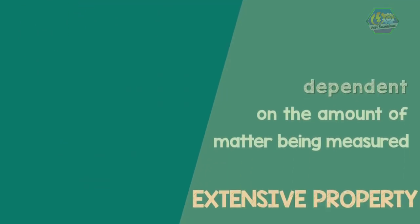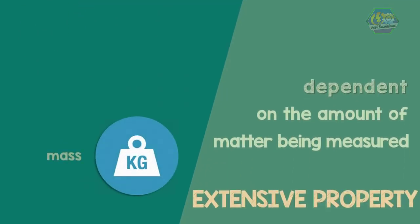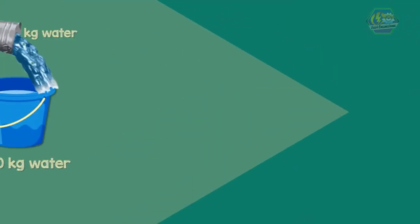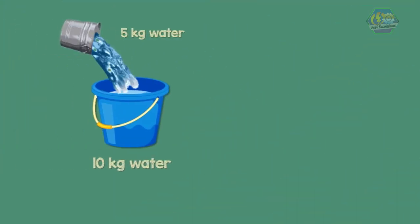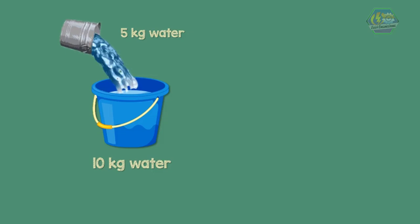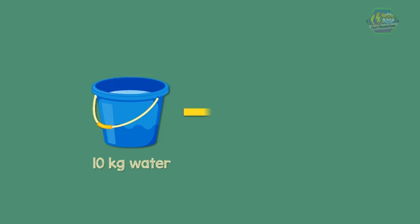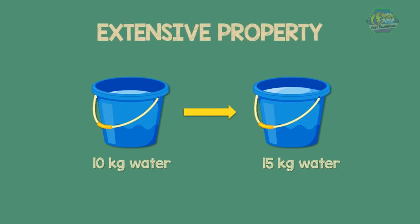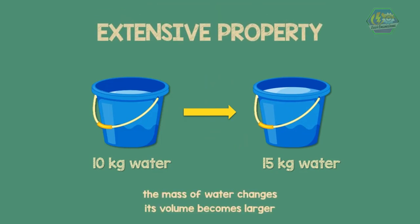Extensive property, on the other hand, includes mass and volume. For example, if 5 kilograms of water is added to the 10 kilograms of water in the pail, it will result in 15 kilograms of water. Hence, the mass of water changes, and so does its volume — it becomes larger.